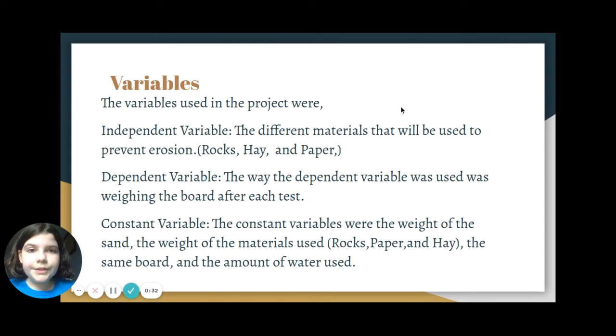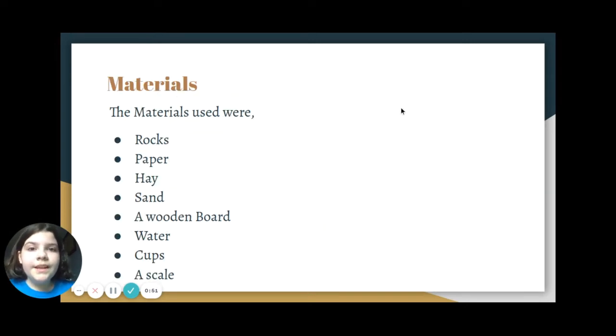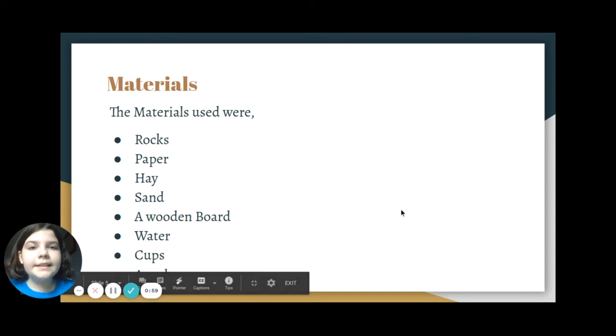The variables used in the project were: independent variable, the different materials that will be used to prevent erosion; dependent variable, weighing the board after each test; and the constant variables were the weight of the sand, the weight of the materials used, the same board, and the amount of water used. The materials were rocks, paper, sand, hay, a wooden board, water, cups, and a scale.